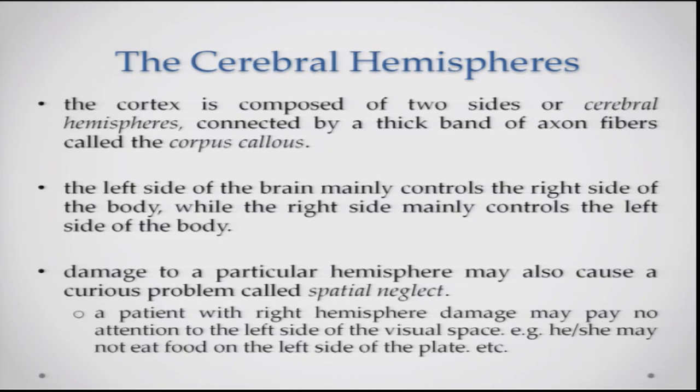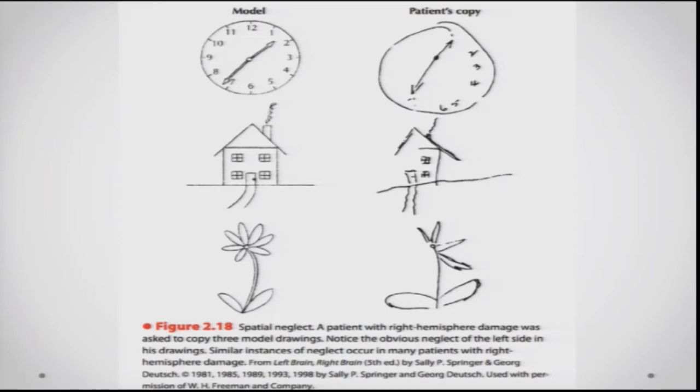Here is a demonstration of the kind of figures these patients produce. The model is shown on the left side, and you can see that the patient produces numbers only on one side of the clock, or similarly makes only one side of the house — this is what is meant by spatial neglect.